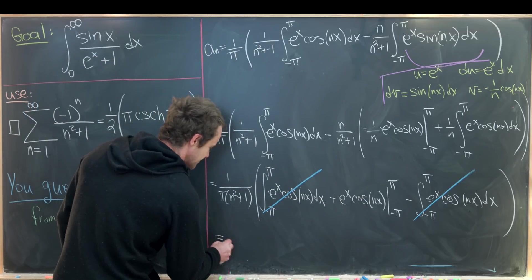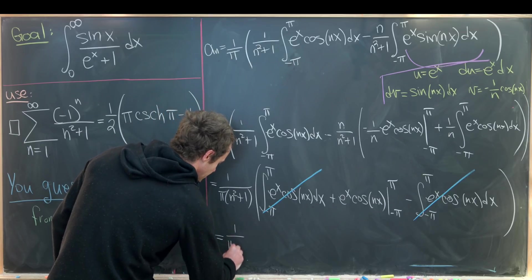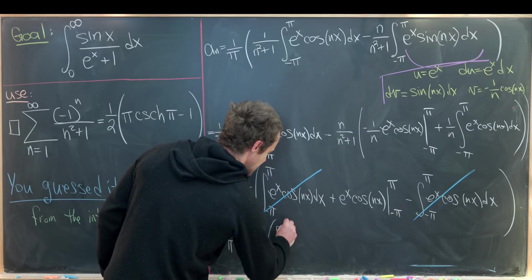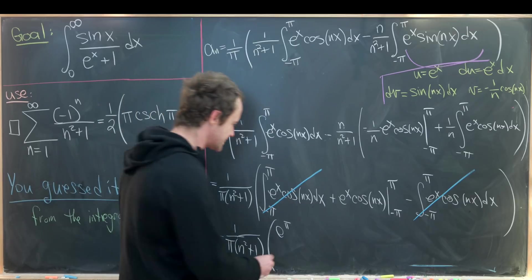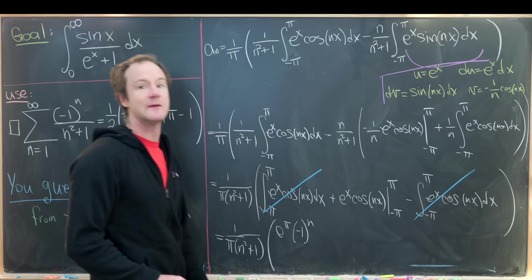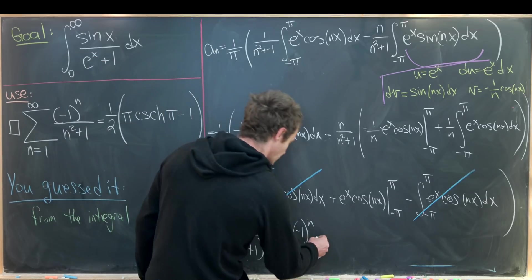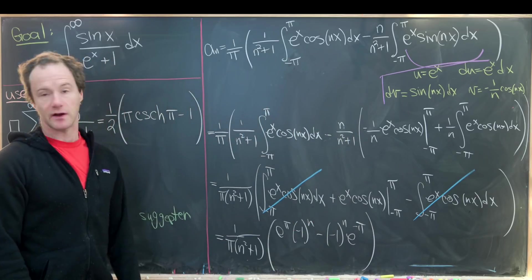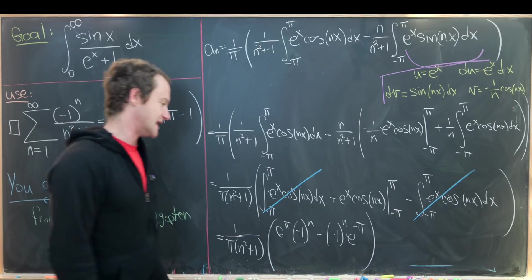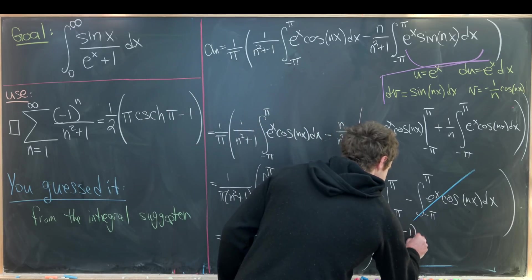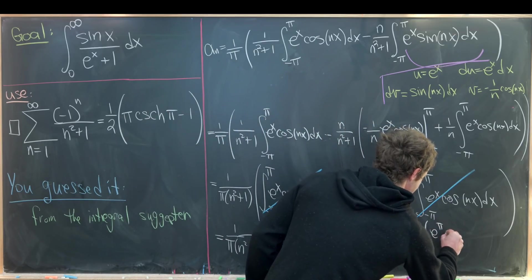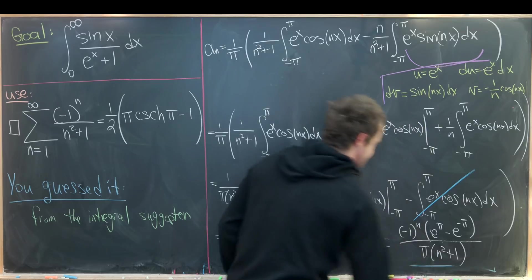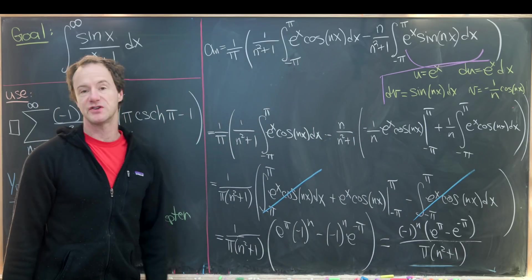Evaluating the boundary term: at x equals π, cosine nπ equals minus 1 to the n, so we get e to the π times minus 1 to the n. At x equals minus π, we get minus minus 1 to the n times e to the minus π. Factoring out minus 1 to the n gives: aₙ equals minus 1 to the n times e to the π minus e to the minus π, all over π times n squared plus 1. That's our final coefficient aₙ.